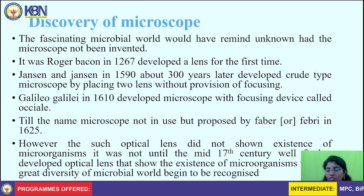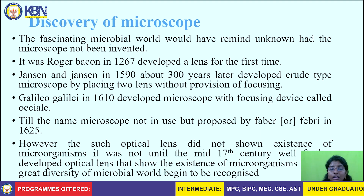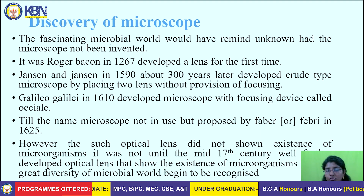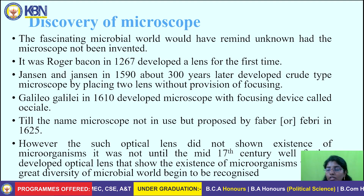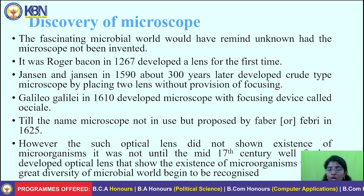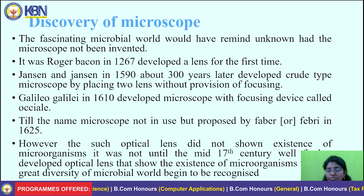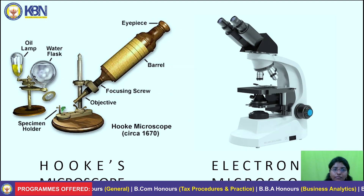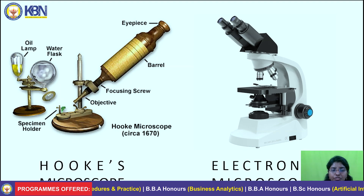The term 'microscope' was proposed by Faber in 1625. However, such optical lenses did not show the existence of microorganisms. It was not until the mid-17th century that optical lenses were developed that showed the existence of microorganisms, and a great diversity of the microbial world began to be recognized. This is Hooke's microscope, which is an ancient type of microscope.